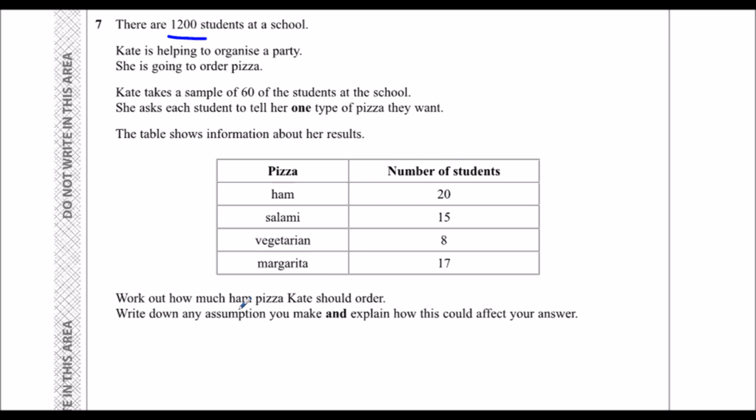How much ham pizza should Kate order? So who liked ham? Well, 20 people out of the 60. So 20 out of 60 and we need to know what that is out of 1,200. So it is something out of 1,200.